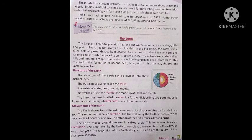Rainwater started collecting in the deep lower areas of the Earth — varsha jal apne niche ke kshetron mein ekatra hone laga. This resulted in the formation of oceans, seas, lakes, etc. In this manner, the present Earth has evolved — is tarike se vartamaan prithvi viksit hui hai.